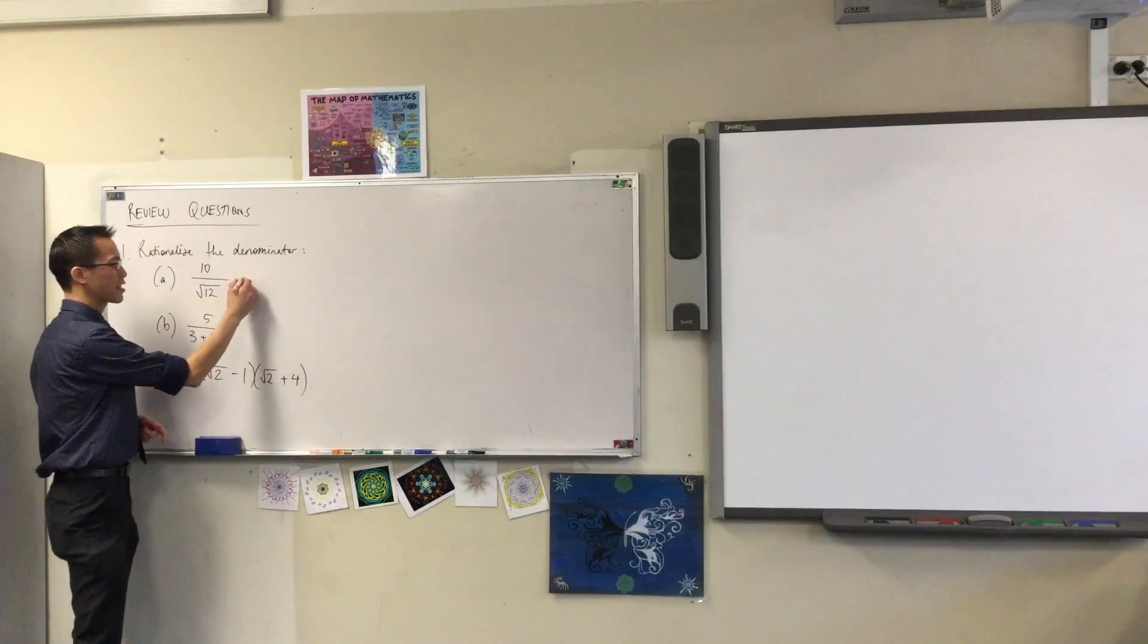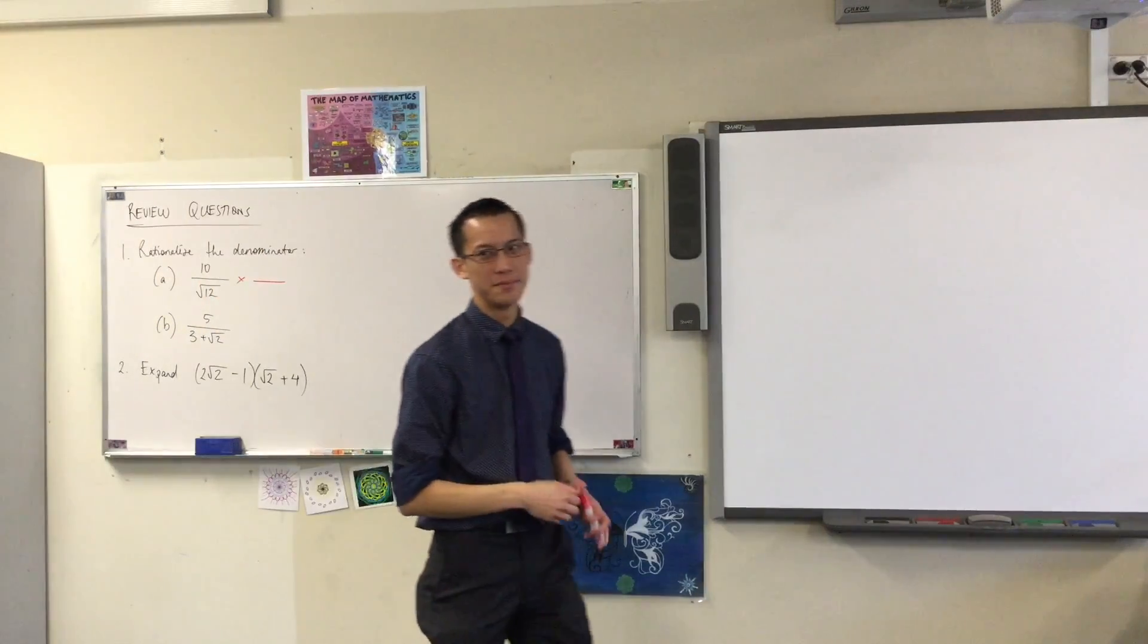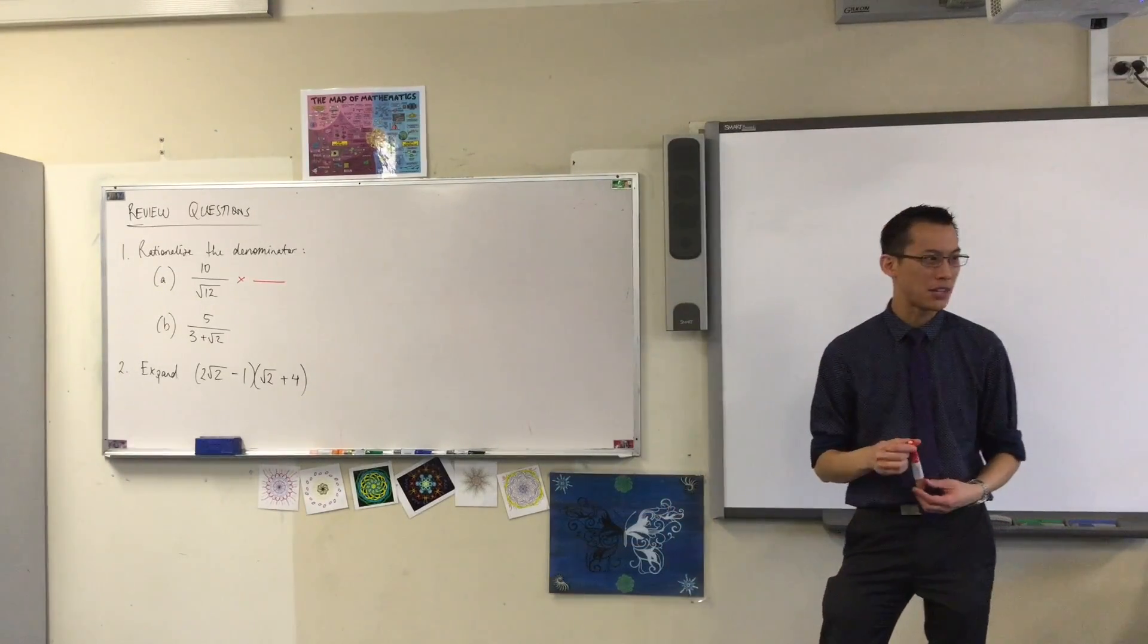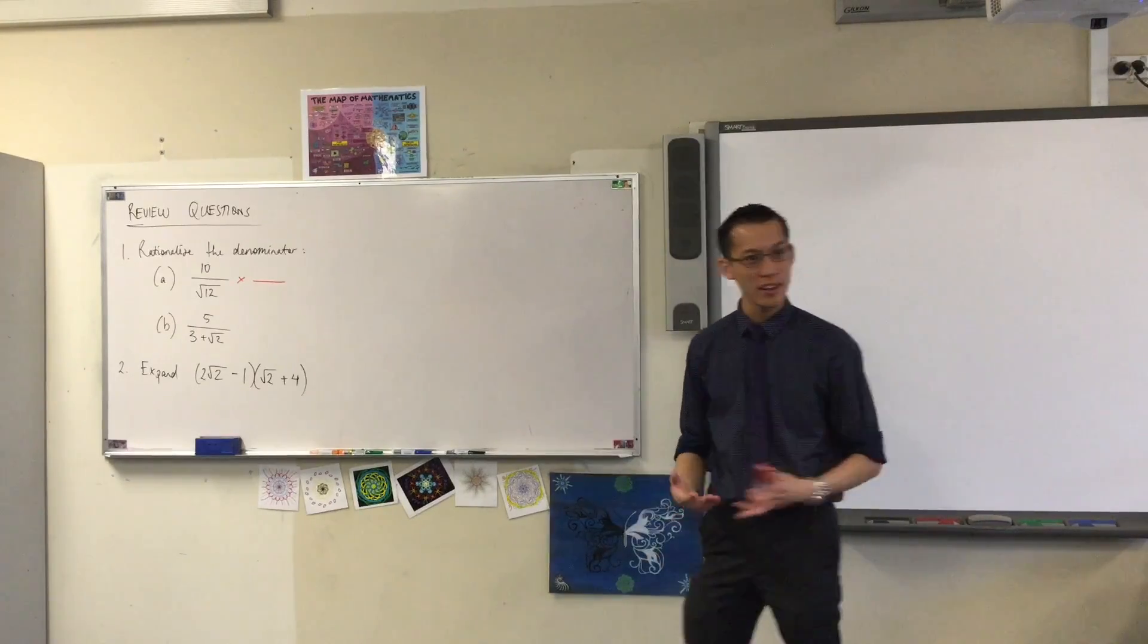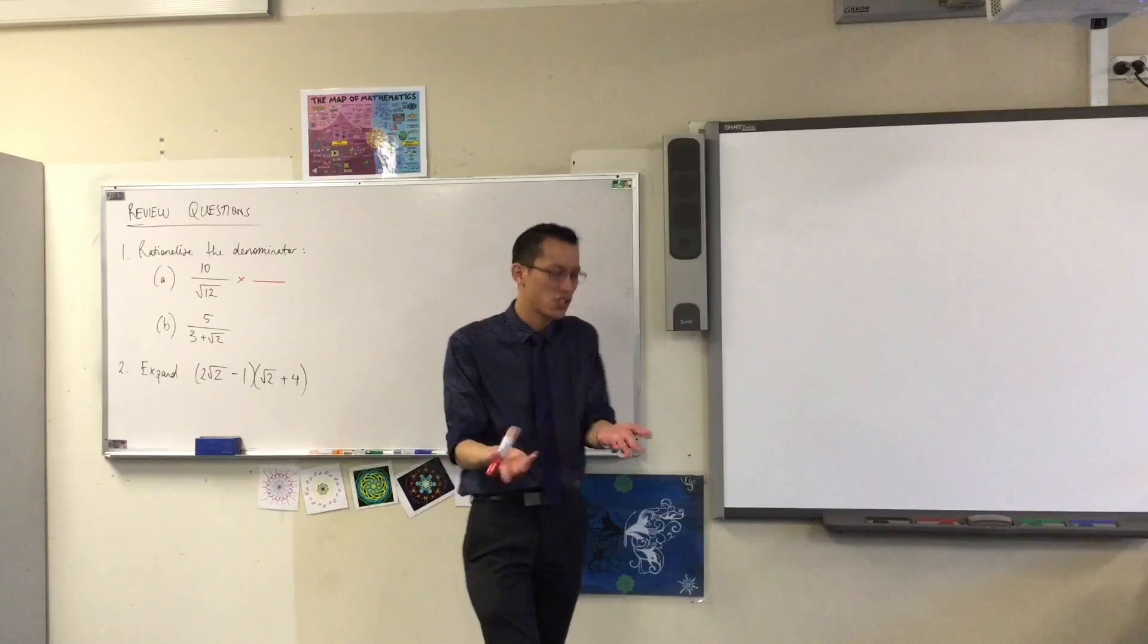I'm going to multiply this fraction by another fraction. That'll help me because what's on the denominator is a surd right now. I don't want it to be a surd, but you can combine surds to make things that aren't surds, that are just normal numbers.